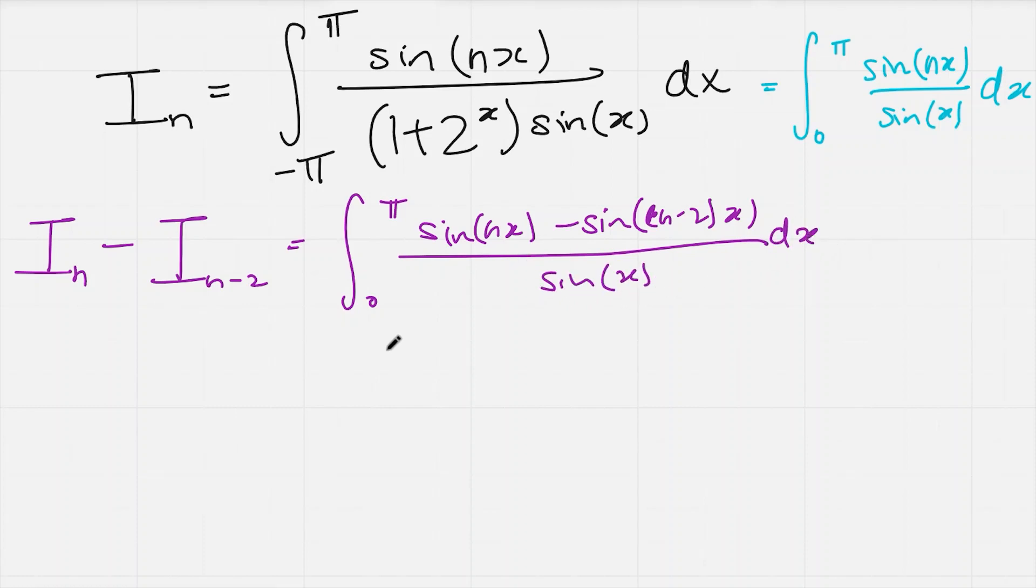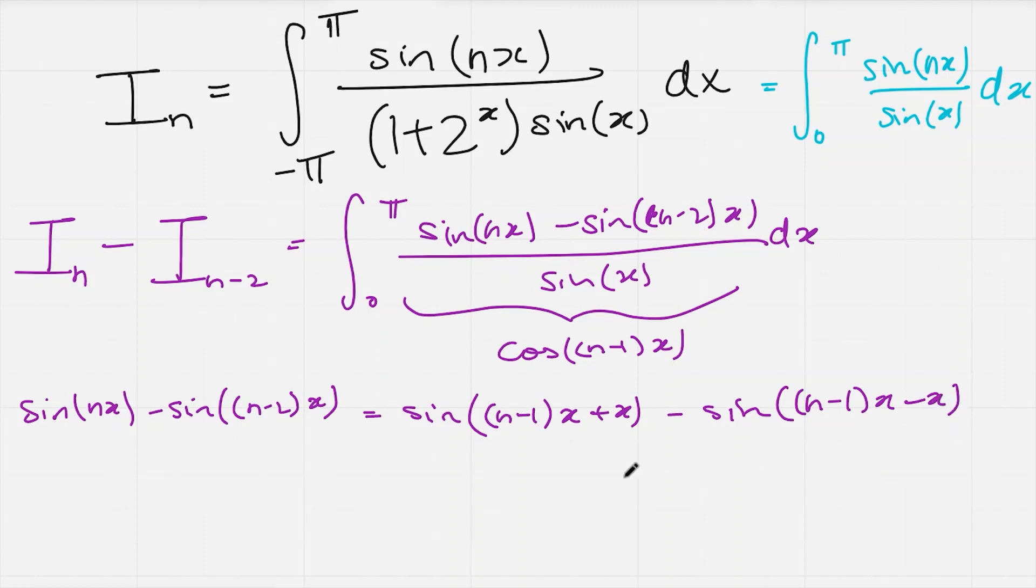OK, now what can I do with this? Well, I noticed that I've got sine of nx minus sine of n minus 2x divided by sine x. And I have a play with some of my trigonometric identities. And it turns out that this whole expression here can be collapsed into this one expression, cosine of n minus 1x. Now, if you want to know why exactly we can do this, you want to consider this expression here. So sine of nx minus sine of n minus 2x, which is what we have on the numerator. And write this as sine of n minus 1x plus x minus sine of n minus 1x minus x, like so.